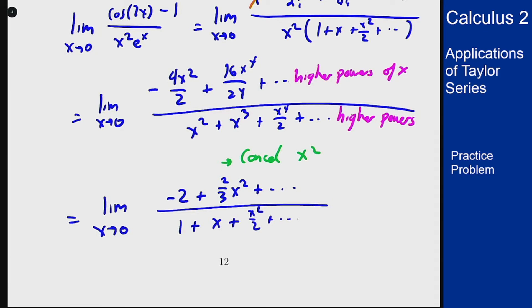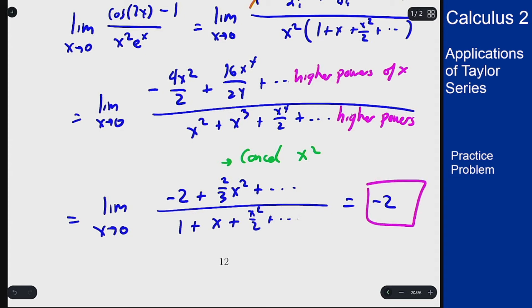This limit I can now take directly, because if I send all the x's to 0 I still have numbers on top and bottom. So the result is -2, and that is the limit we're trying to compute, since all the x terms go away as x → 0.